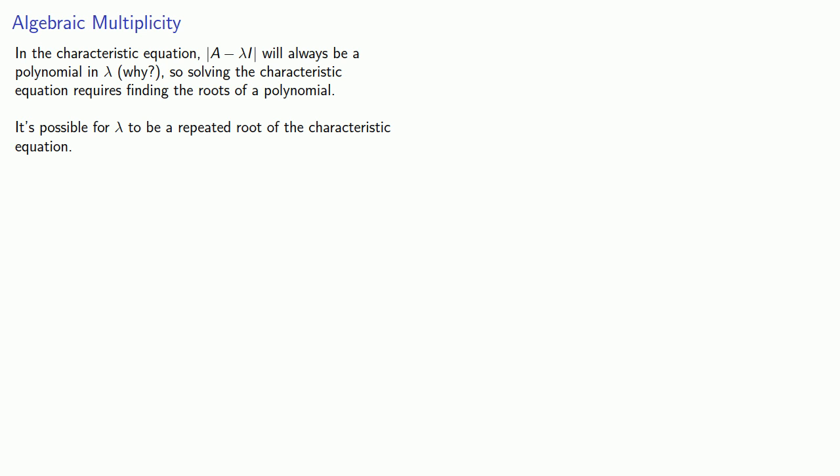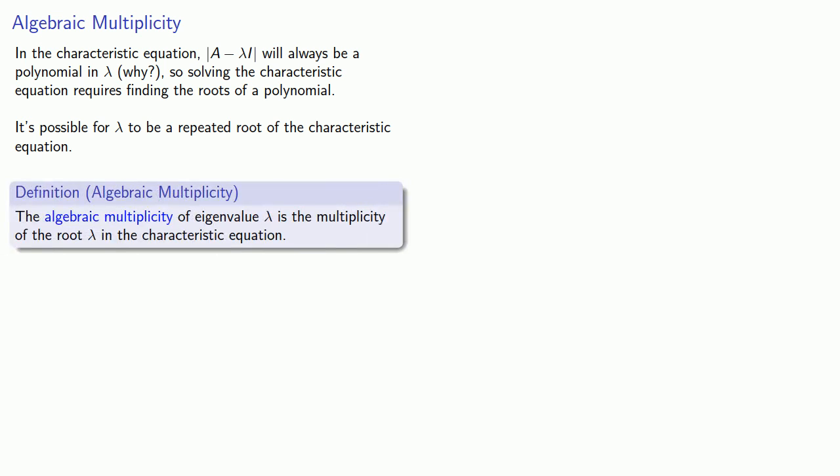This leads to what is known as the algebraic multiplicity of an eigenvalue. The algebraic multiplicity of an eigenvalue lambda is the multiplicity of the root lambda in the characteristic equation.